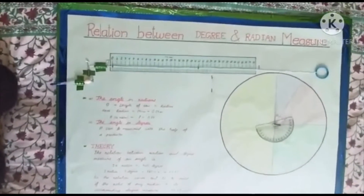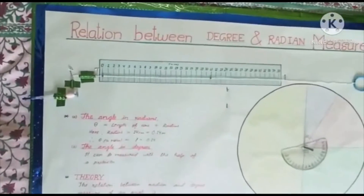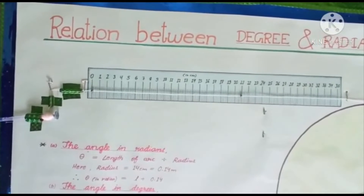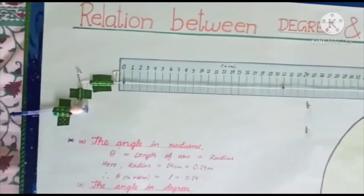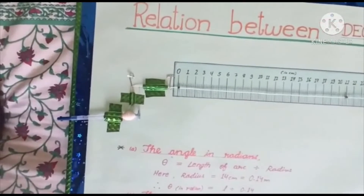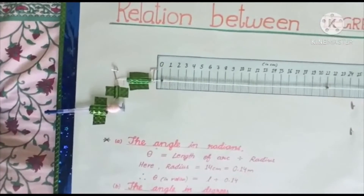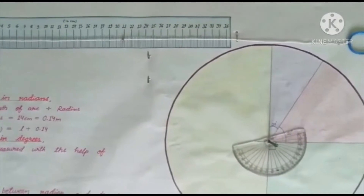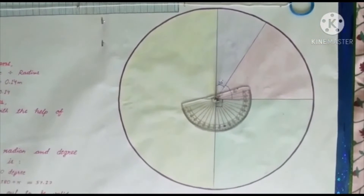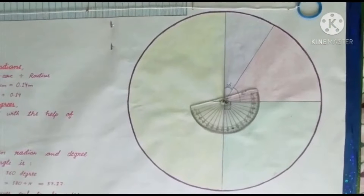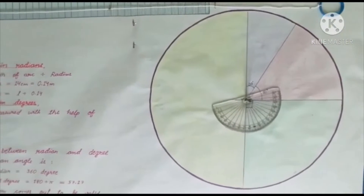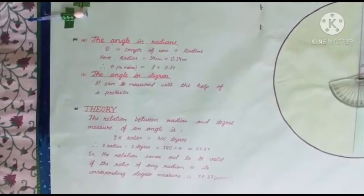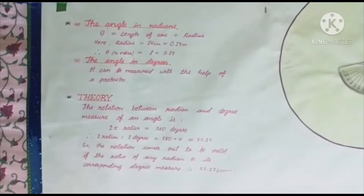This is my model. There is a scale with a list count of 0.2 cm. There are some arrangements I had made. This is a circle of radius 14 cm which is fitted with a rotating protractor. There is some theory I had written.